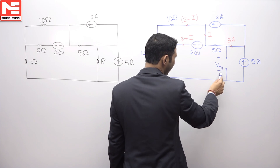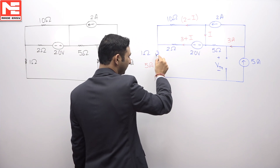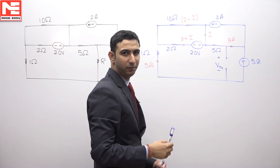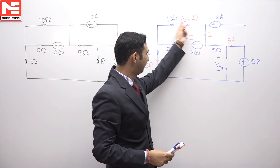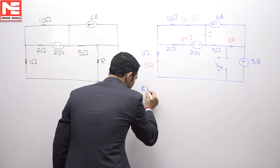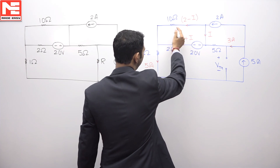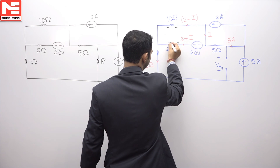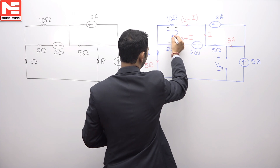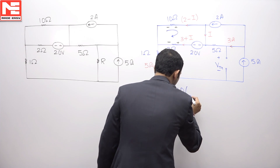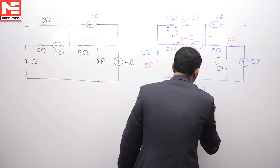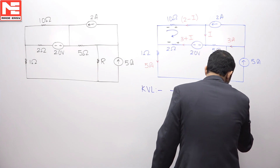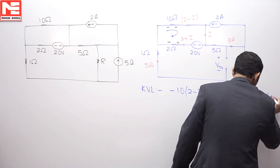Now, Vth will be the voltage drop across this, this, this, and this. The current in this resistance is known and in this resistance is known, but the current i here is unknown. So my task is to find the value of i first. Applying KVL in this loop: because the current is flowing in this direction, the drop will be plus-minus for this and plus-minus for this. Applying KVL in this loop, it will be minus of 10 into (2 minus i) plus 20 plus 2 into (3 plus i), which will be equal to 0.